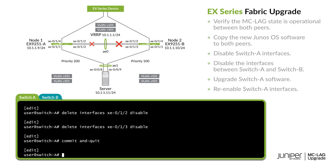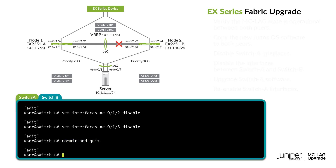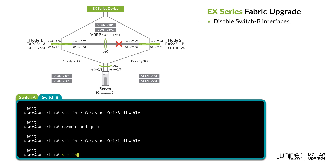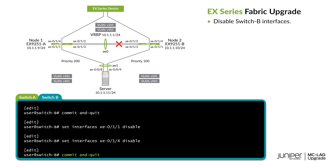We're almost ready to upgrade switch B. First, let's disable the server-facing and uplink interfaces on switch B. The server-facing and uplink interfaces are now disabled.